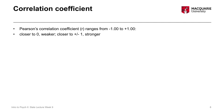The closer the number is to either one or negative one, the stronger the relationship. We have a couple of rules of thumb for what's considered a weak versus a moderate versus a strong relationship. This is the same principle as when we were talking about Cohen's D effect sizes, where you could use the actual size of the number to say whether it's a big or small difference. The actual size of the correlation coefficient itself tells you how strong the relationship is.